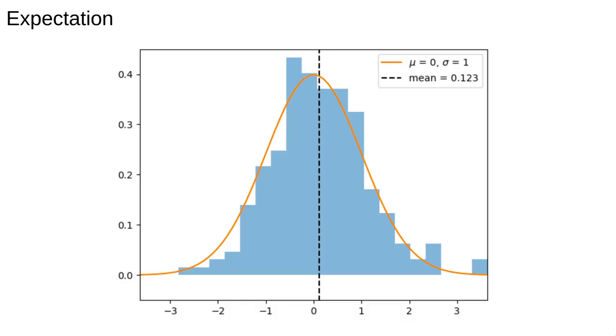Here we have an example of a sample from a distribution where the distribution has parameters 0 and 1 specifying the centre and spread of that distribution. The mean of the histogram is 0.123 which is close to the mean of the true distribution.